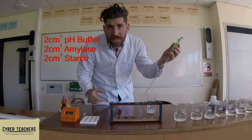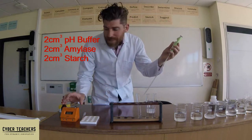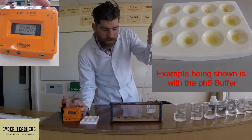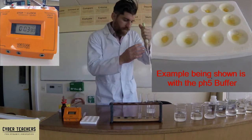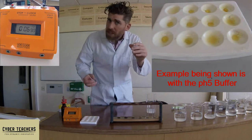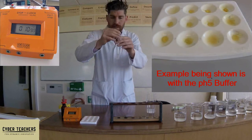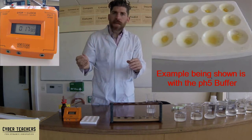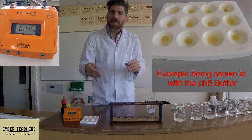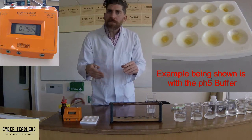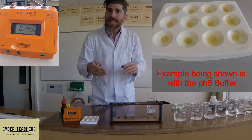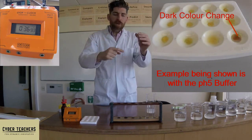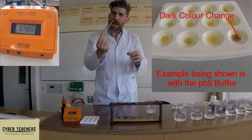Take two centimetres cubed of starch solution and as soon as you're ready to add it, get ready on the stop clock. As soon as it's introduced, start the stop clock. Give your solution a good mix — the stop clock has started — then every 30 seconds take one drop and drop it into your iodine solution. If there's still starch present it will go blue-black; if the reaction is complete it will stay orange-brown. Between each drop, empty the pipette out fully so that you've only got one reaction happening in the test tube, not some also happening in the pipette.